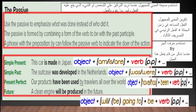أما في المستقبل تكون الصيغة كالتالي: المفعول به object زائد صيغة المستقبل will أو be going to، زائد الفعل المساعد be، زائد الفعل في التصريف الثالث. كما نرى في المثال: A clean engine will be produced in the future — will زائد be زائد التصريف الثالث للفعل.